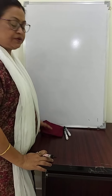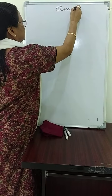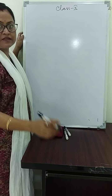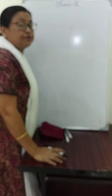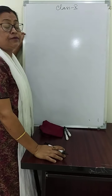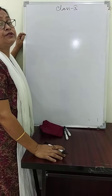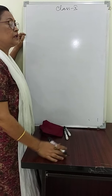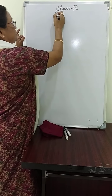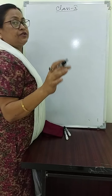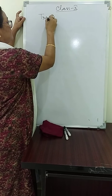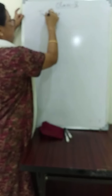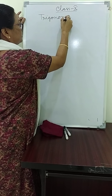Class 10, today we will discuss the trigonometric identity. So what is a trigonometric identity? An equation involving the trigonometric ratios. So let us summarize — we already studied the trigonometric ratios in class 9.